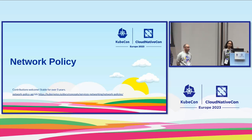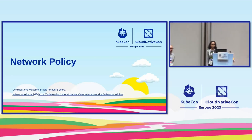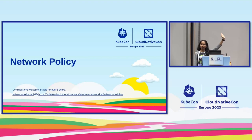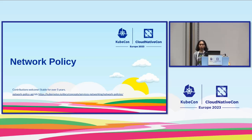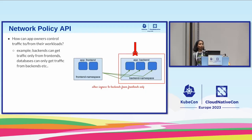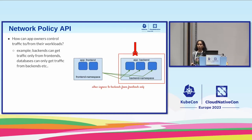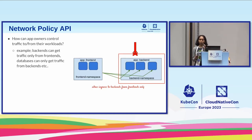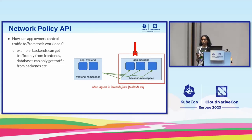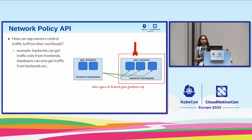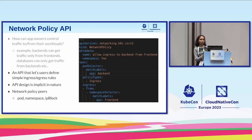Network policies is another subgroup within SIG Network. Can we have a show of hands if you've used network policies before? It's a core v1 stable API that we've had for over five years now. It was designed with tenant or namespace owners in mind — for app developers who want to secure their workloads and define rules on how to enforce layer 3 or layer 4 traffic flow between pods and namespaces. A simple use case: you want your back-end pods to receive traffic only from your front-end pods.